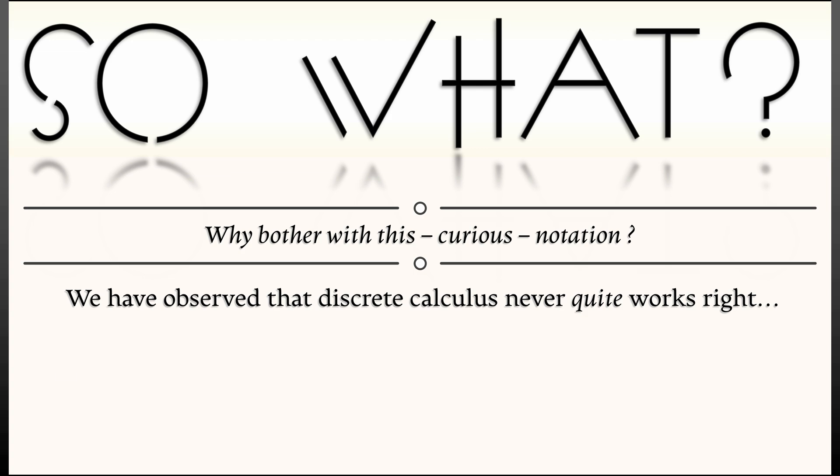Think about it. What is the derivative of n squared? It should be 2n, but the discrete derivative, the forward difference of n squared, is, as we have shown, the sequence 2n plus 1. It's just off by a little bit. So close, but it's off.